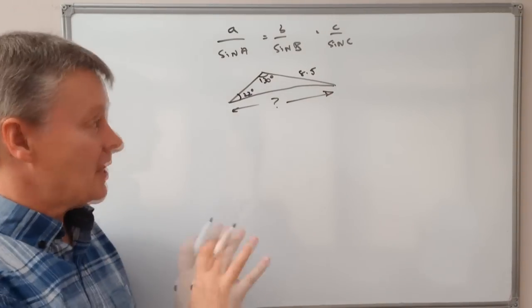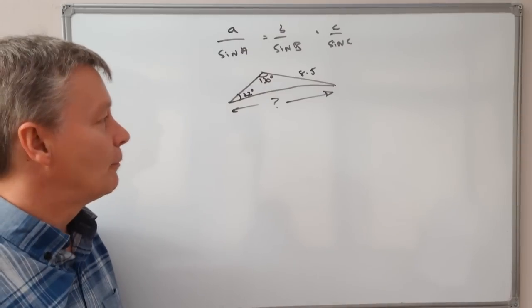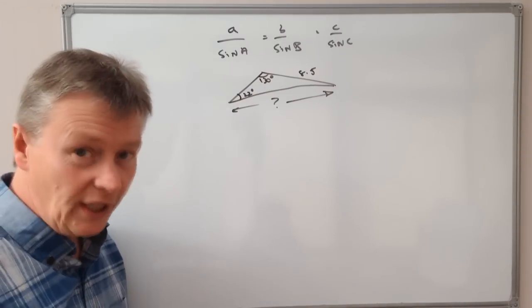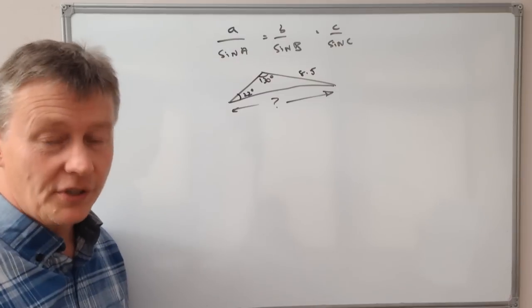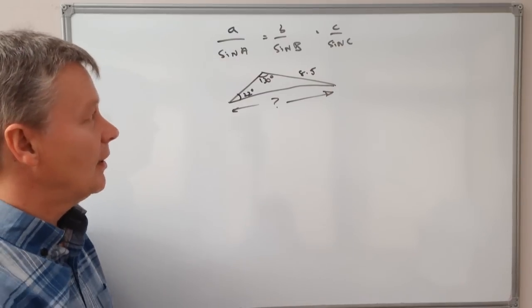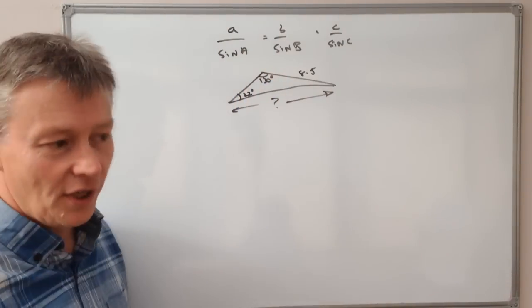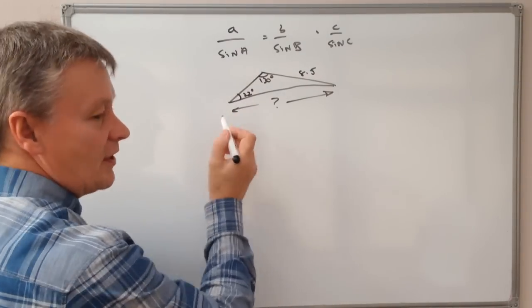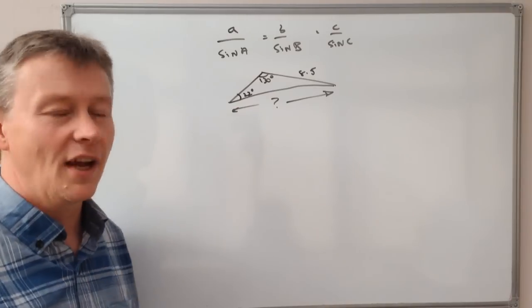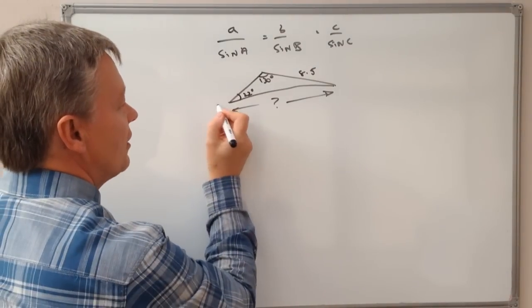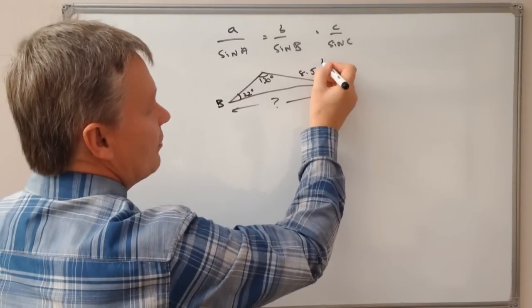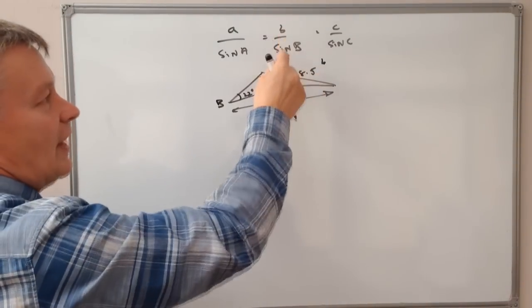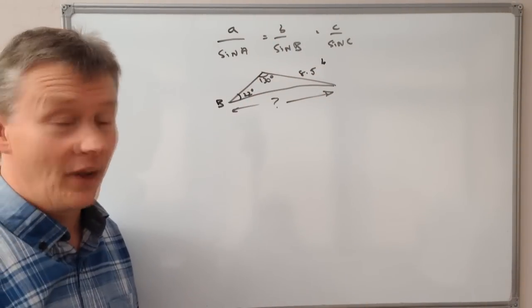Best advice when you get these sorts of questions is to relabel them to suit yourself. It just makes it a little bit easier if you use this sort of terminology. So I actually know that as 22 degrees, so I'm going to call it B, and opposite to that is going to be small b. So that's that relationship at the top there.